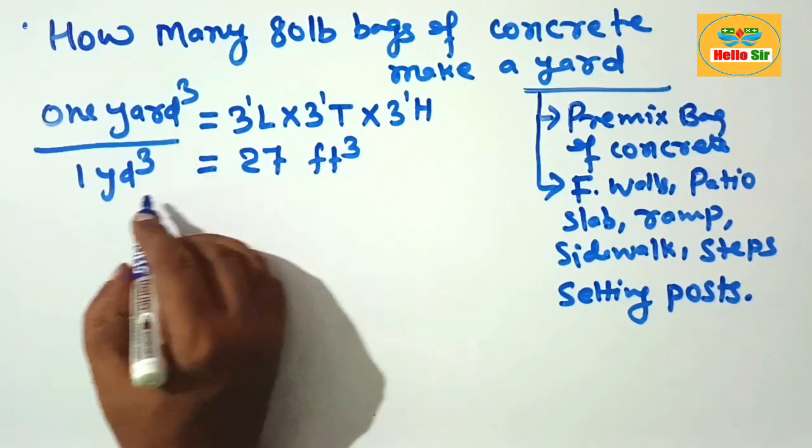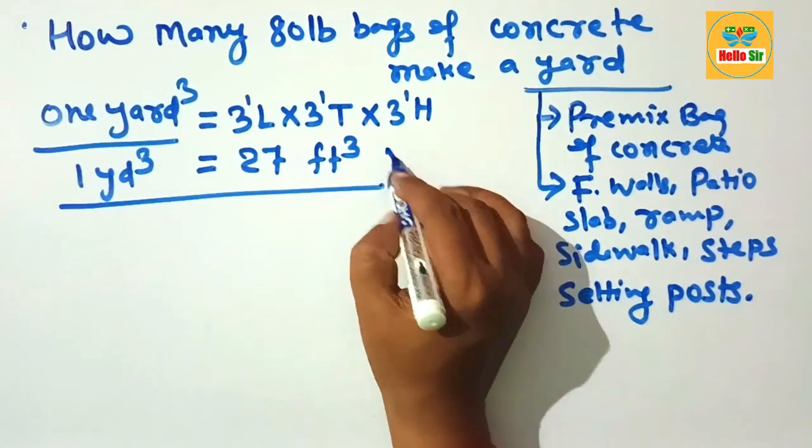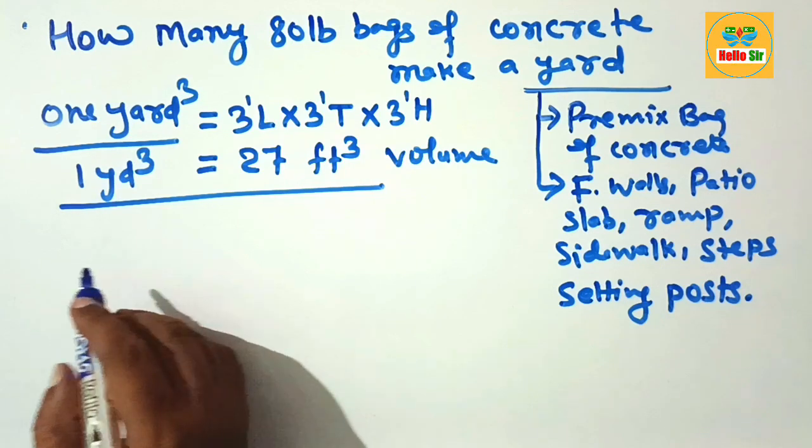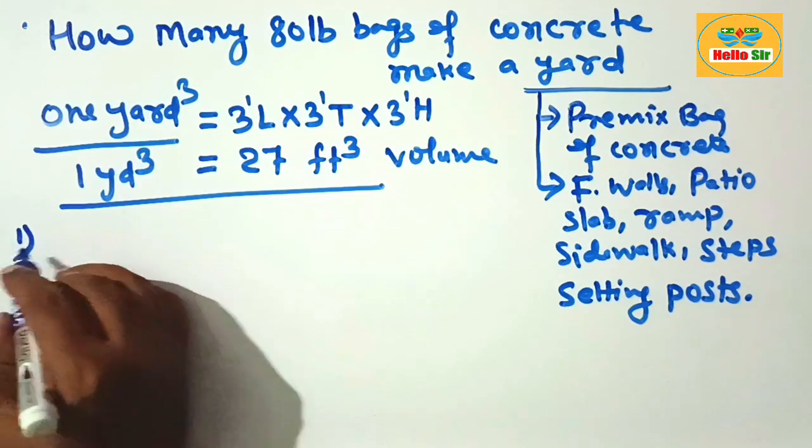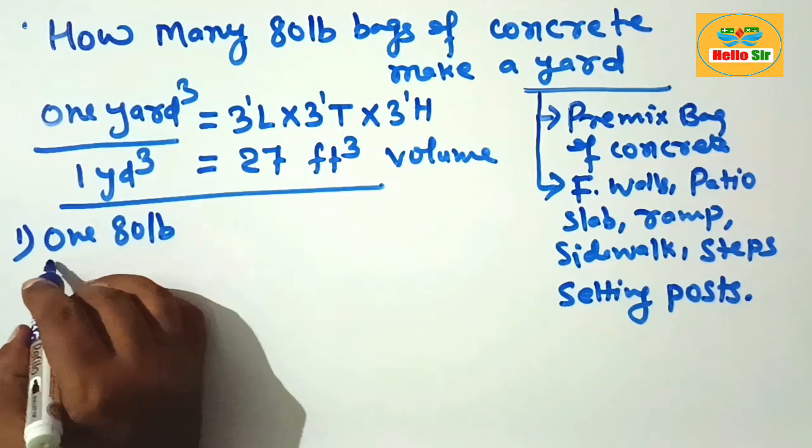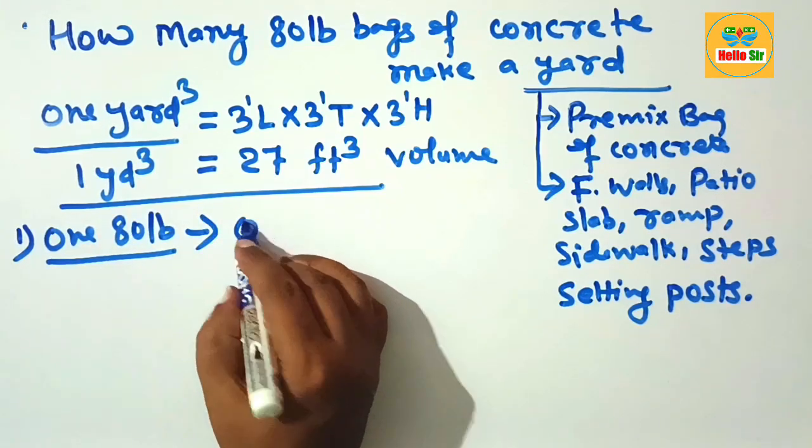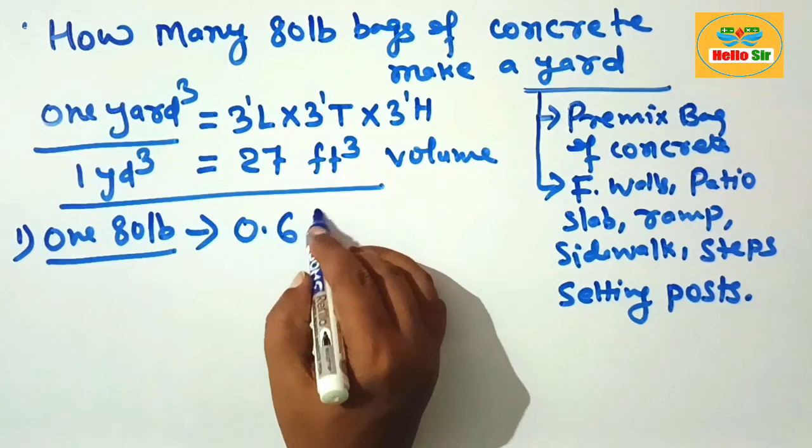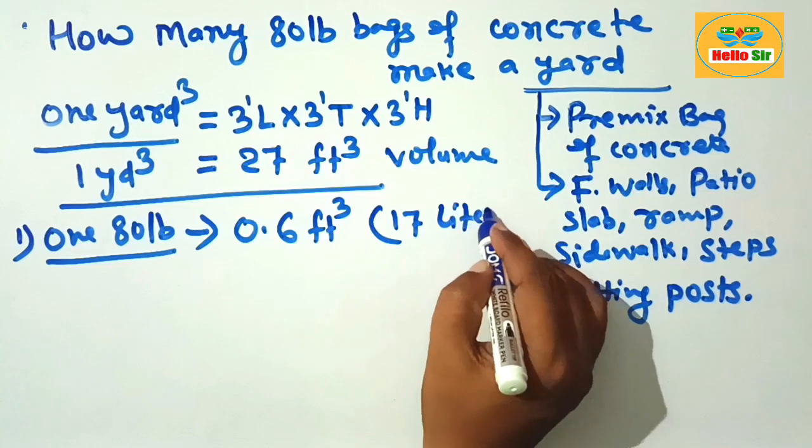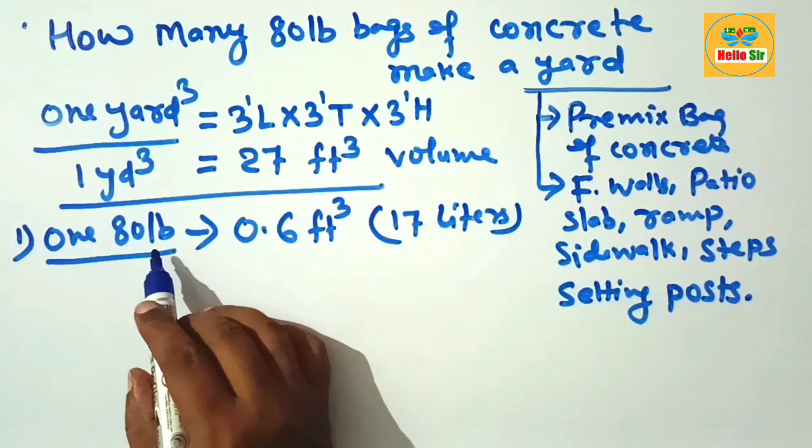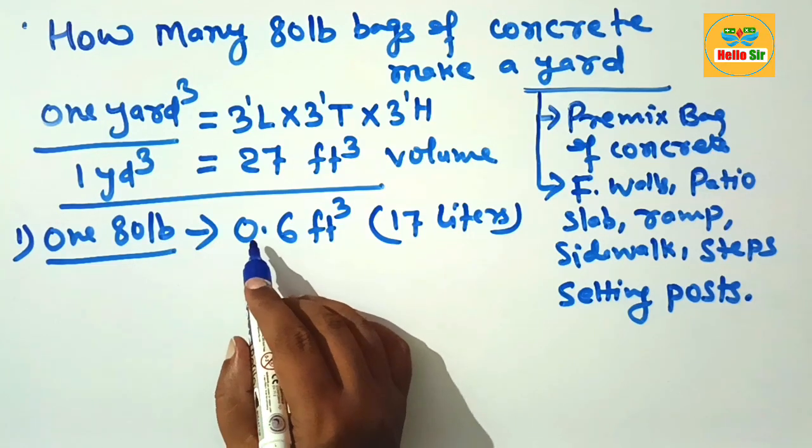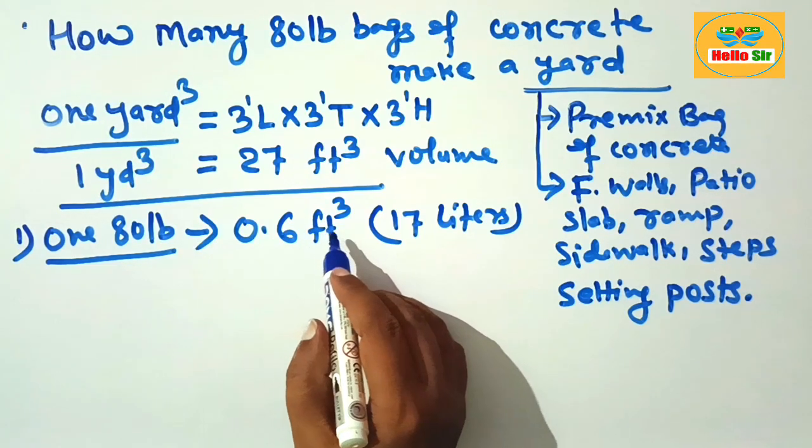You have to find out the number of 80 pound bags of concrete. Now, one 80 pound bag of concrete yields a volume of about 0.6 cubic feet, which equals 17 liters. Remember this: one 80 pound bag of brand name Sakrete and Quikrete yields a volume of about 0.6 cubic feet, which equals 17 liters.